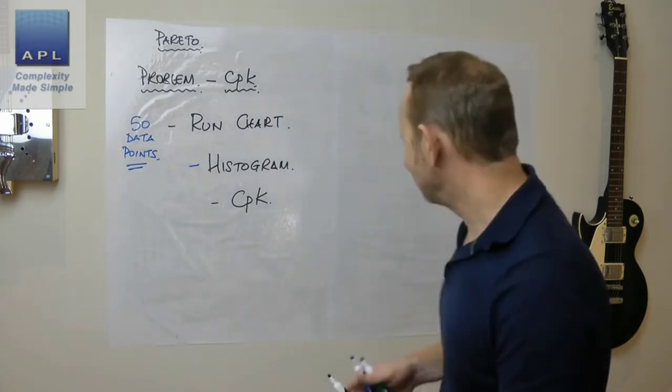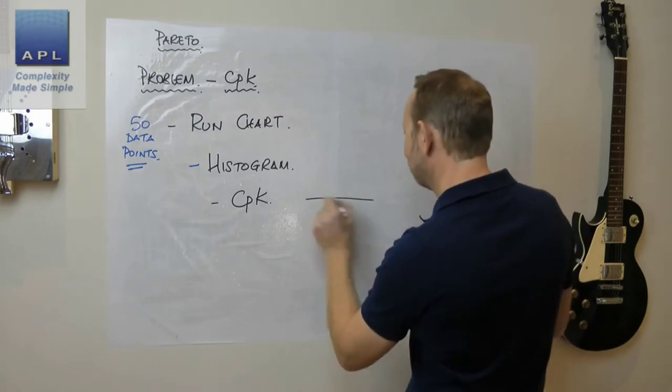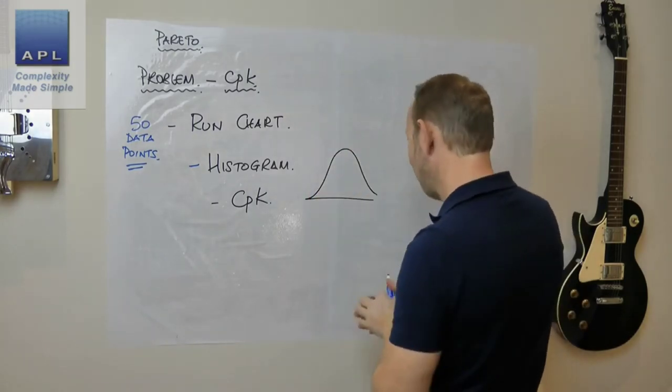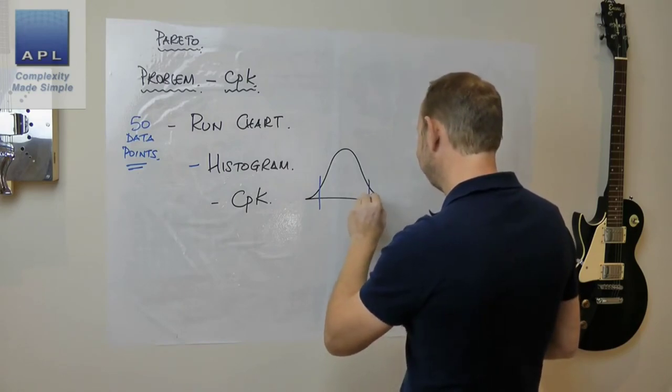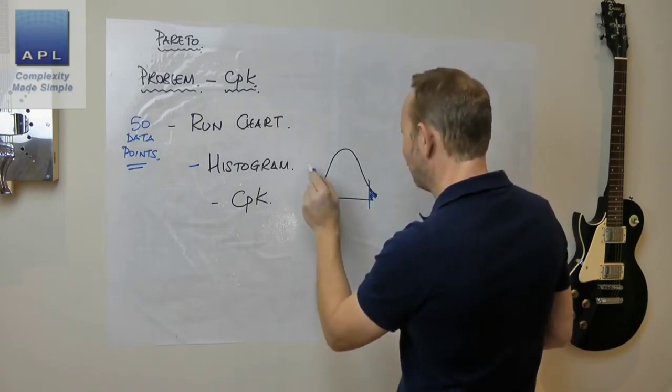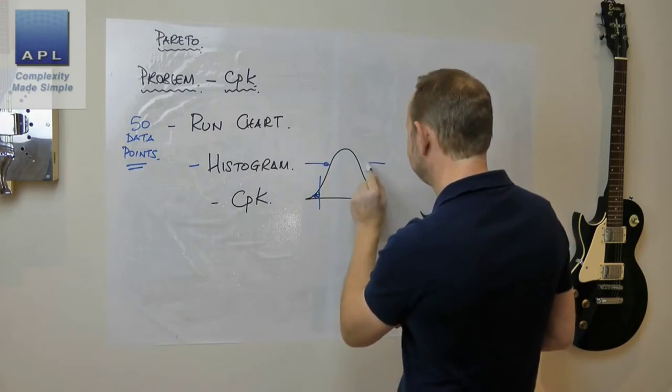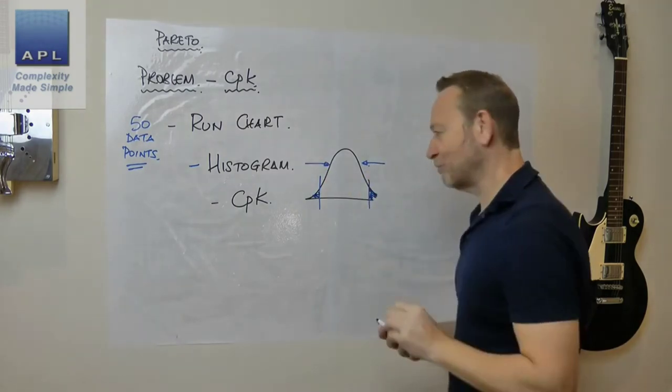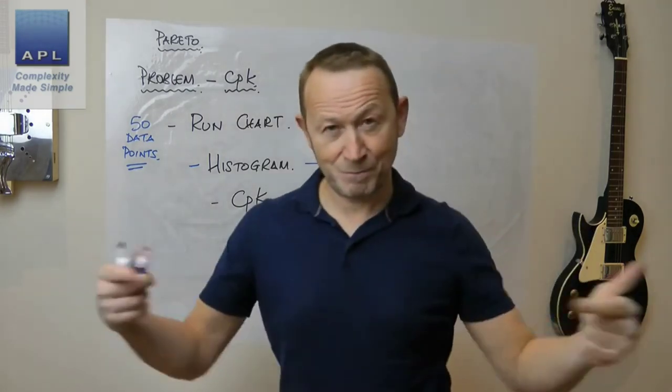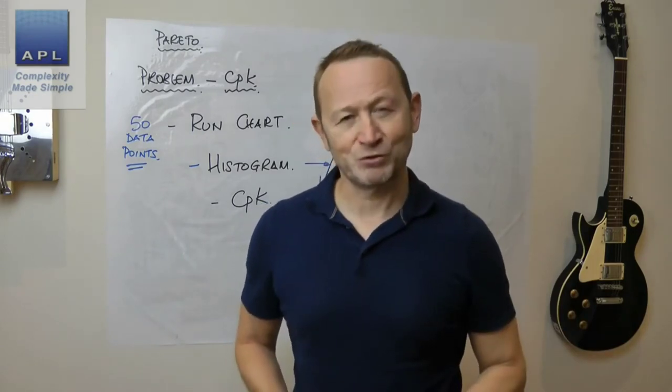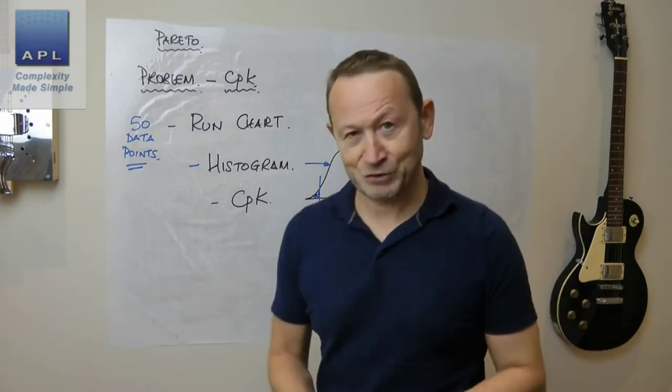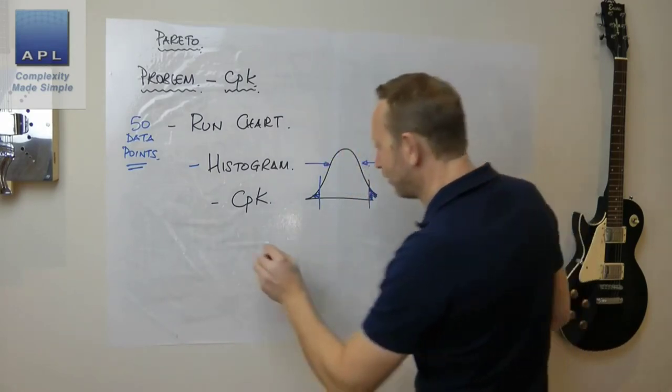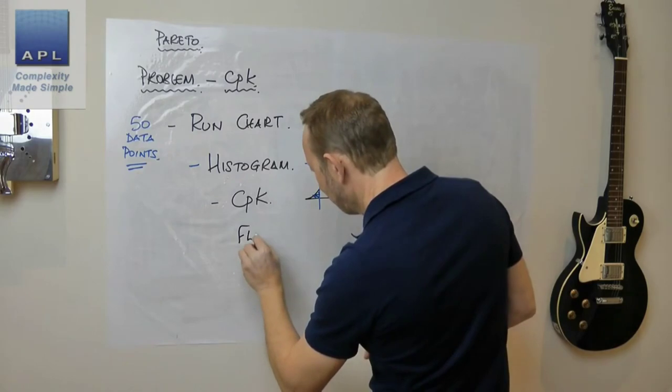Now, what's the CPK telling me? It's telling me I have too much variability. I have rejects hanging out the ends. I've got this shape where I've got data hanging out the ends, and what I need to do is reduce the variability, push that distribution in, and get rid of my defect rate. Which tool am I going to use for this? Now we're going to go flow diagram.